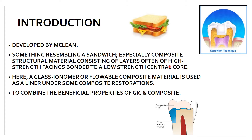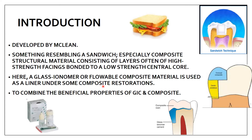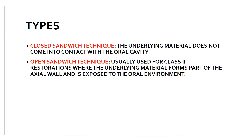A high-strength facing is bonded to a low-strength central core. This is your central core - a low-strength material - and over it is a high-strength facing. You use a GIC or a flowable composite material as a liner under a composite material. This composite restoration has a GIC or flowable composite beneath it. This is done to combine the beneficial properties of both GIC and composite, as they individually have their own advantages.